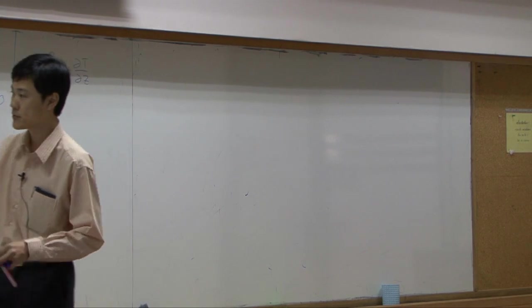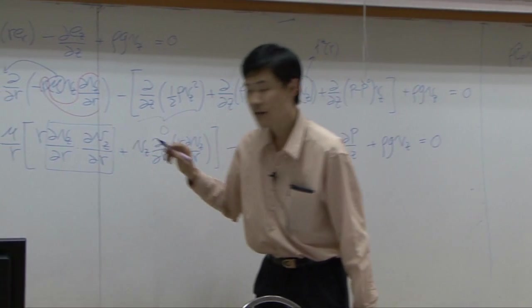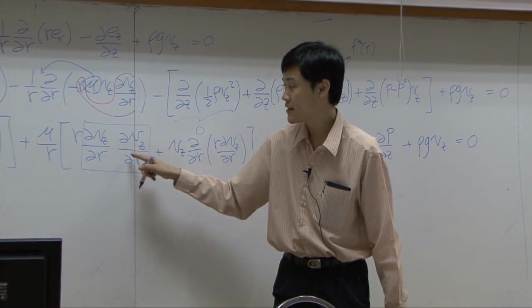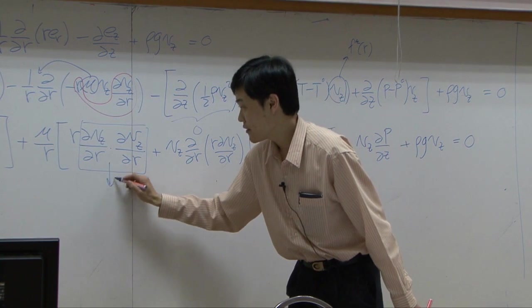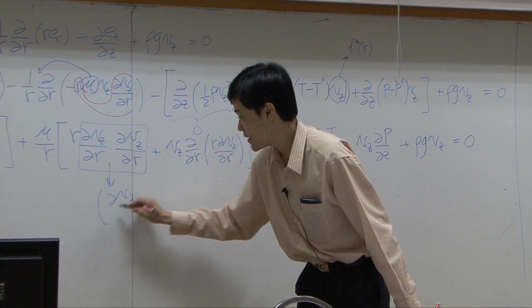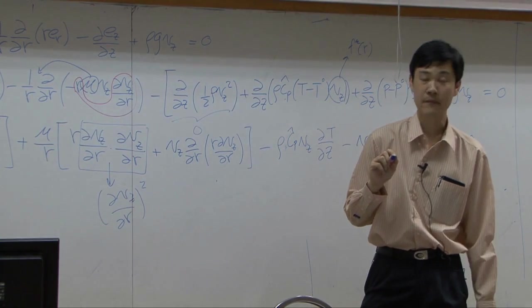Oops, sorry. Minus two terms combined. This is not differentiated, this is multiplication. You get dVz by dr squared.